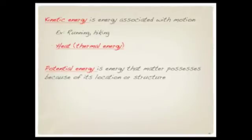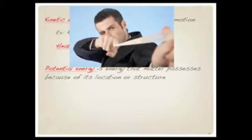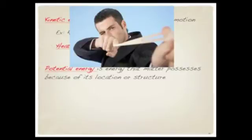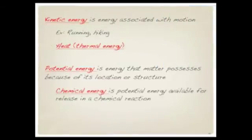There's also potential energy, and potential energy is energy that matter possesses because of its location or structure. Think about a stretched-out rubber band that you're holding in a stretched position. That rubber band has a lot of potential energy. If you release it, it's going to fly through the air. When you release it, that potential energy converts into kinetic energy as it flies through the room. There's another form of potential energy called chemical energy — that's a kind of potential energy available for release in a chemical reaction. Chemical energy can be stored in chemical bonds, so when you break those bonds, the energy gets released.